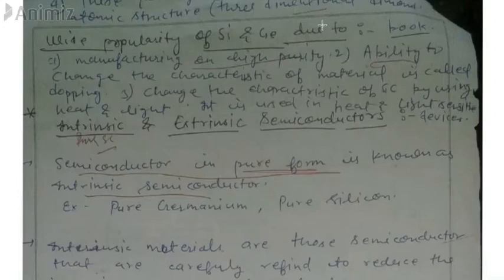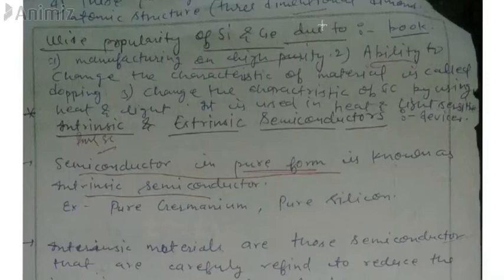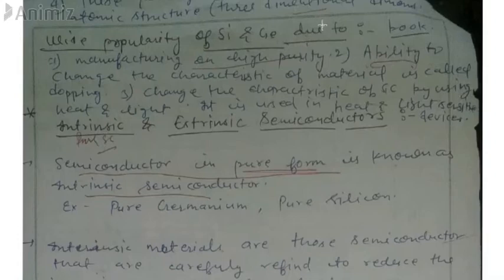Silicon and germanium can be manufactured at a very high purity level. The second reason is the ability to change the characteristics of the material, which is called doping. By adding impurities through doping, the characteristics of the material can be changed. The third reason is that the characteristics of silicon and germanium can be changed using heat and light — they are used in heat and light sensitive devices.